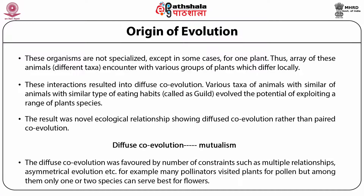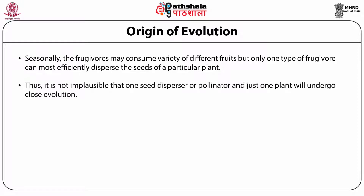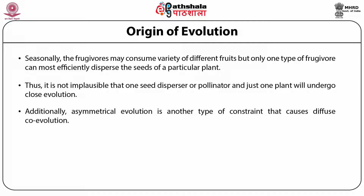Mutualism does not begin as a one-to-one interaction. Several different kinds of insects, birds and mammals attack the plants, and these organisms are not specialized except in some cases for one plant. Thus, an array of these animals of different taxa encounter various groups of plants which differ locally. These interactions result in diffuse coevolution. Various taxa of animals with similar eating habits evolved the potential of exploiting a range of plant species. The result was novel ecological relationships showing diffuse coevolution rather than paired coevolution. Diffuse coevolution mutualism was favored by constraints such as multiple relationships and asymmetrical evolution.